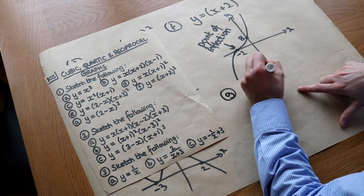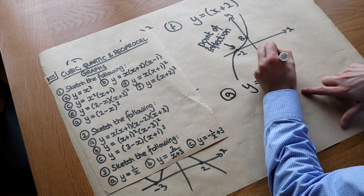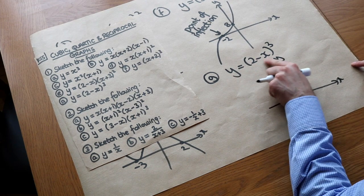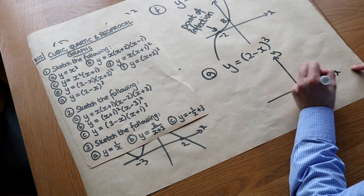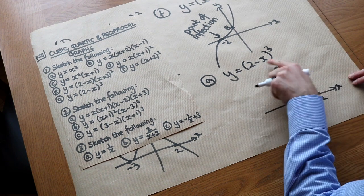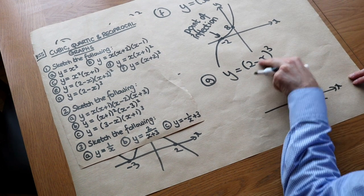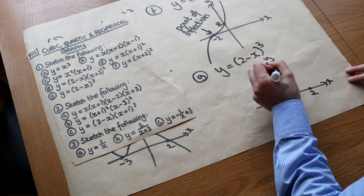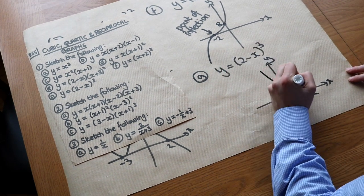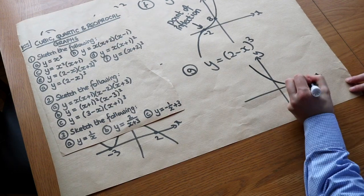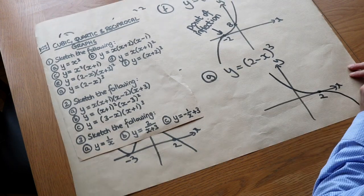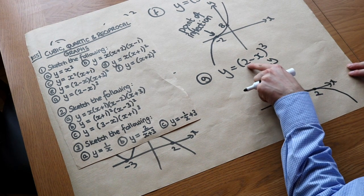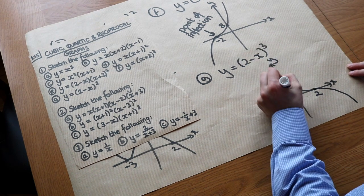Finally for cubics, y equals (2-x)³. To get the root, make y equal to 0: if 2 minus x equals 0, we get a root of 2. Expanding gives minus x cubed, so it's a downhill cubic. We get the point of inflection — a plateau — at 2. The y-intercept: (2-0)³ equals 8.